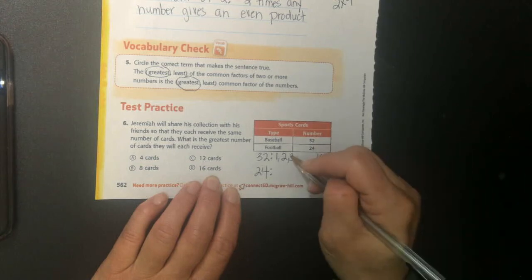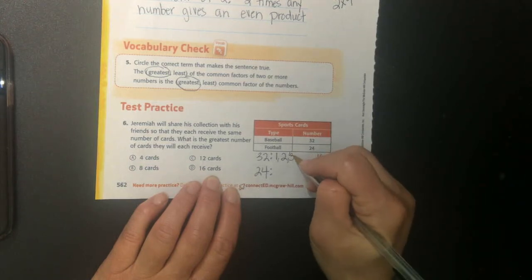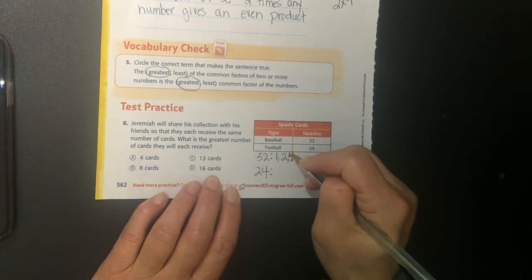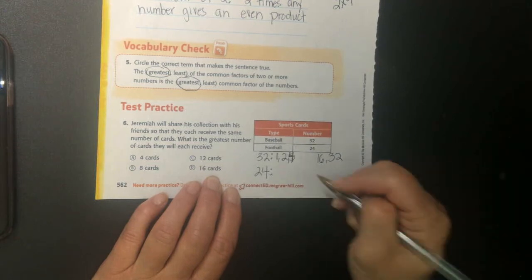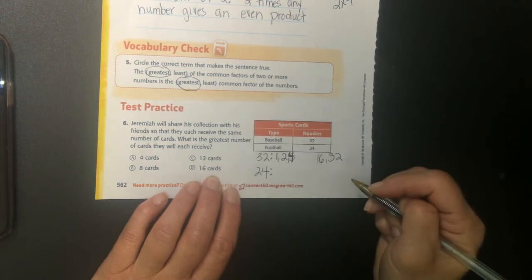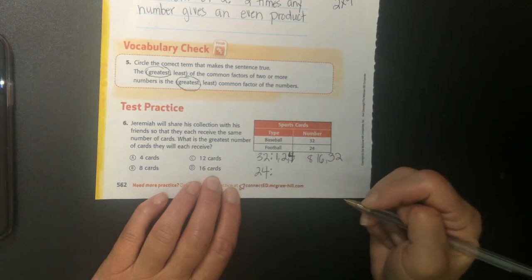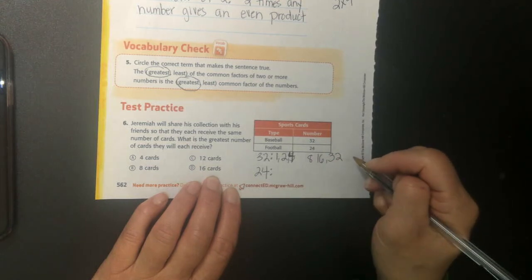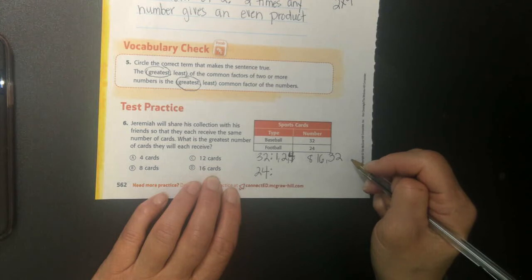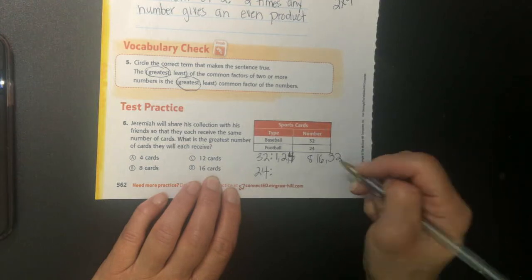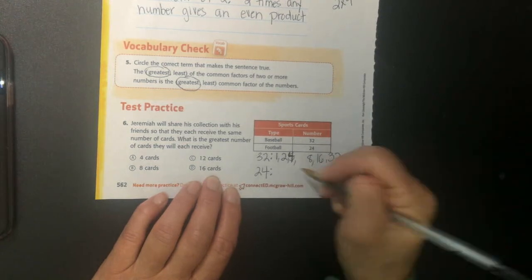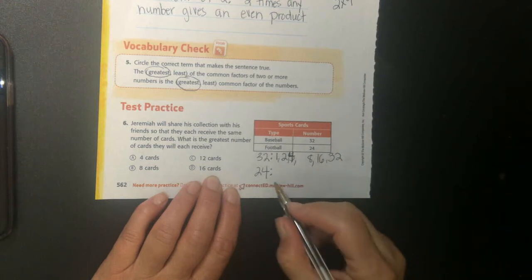3 does not go into 32. 4, right? 3 won't go into it. It won't give me an even. But 4 will because I know 4 times 8 is 32. How about 5? Nope. 6? Nope. 7? No. 8 is already there. So, I'm done.